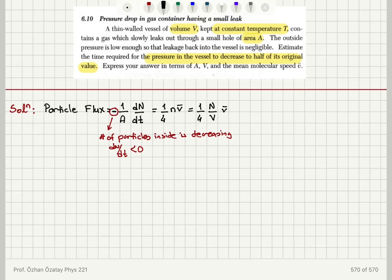If I rearrange this equation, minus 1 over A dN dt is equal to the mean speed divided by 4 times the volume times capital N.